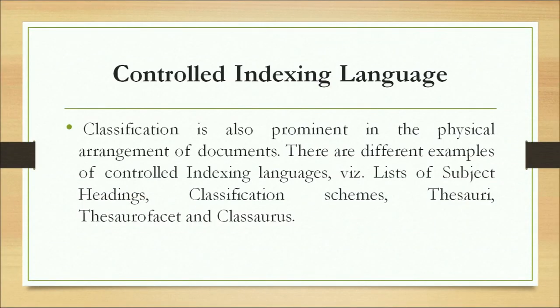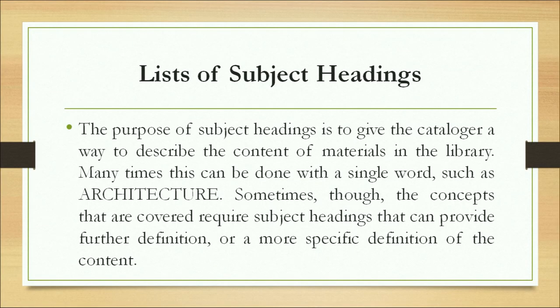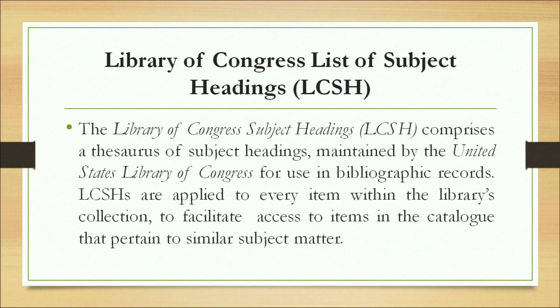Examples of controlled indexing languages include lists of subject headings and classification schemes. The purpose of subject headings is to give the cataloger a way to describe the content of material in the library using a term from the controlled vocabulary. The Library of Congress Subject Headings (LCSH) comprises a thesaurus of subject headings maintained by the United States Library of Congress for use in bibliographic records. It is applied to every item in the library's collection and facilitates access to items pertaining to similar subject matter.